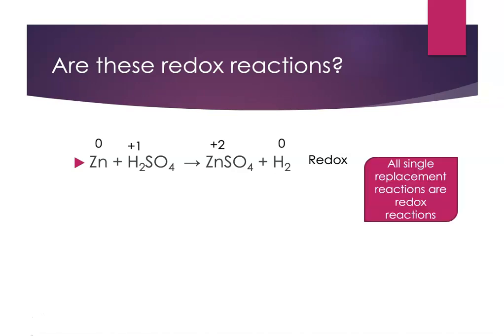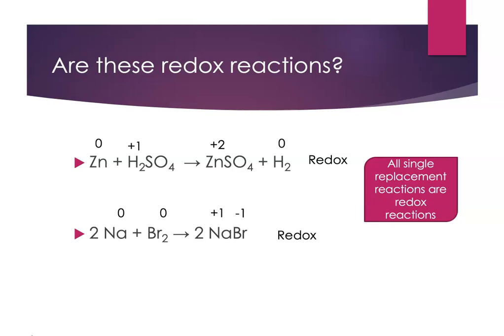All single replacement reactions are going to be redox reactions, because it's an element with a compound to make an element with a compound. Let's look at this reaction: sodium atoms reacting with bromine to make sodium bromide. Is this a redox reaction? Yes — both reactants are elements to make a compound, so they had to have changed their charge. The sodium had a charge of zero because it's an element; the bromine has a charge of zero because it's an element. But in the ionic compound on the product side, I've got sodium ions with a charge of plus one combined with bromide ions with a charge of minus one. So yes, this too is a redox reaction — and we knew it before we actually looked at the charges.